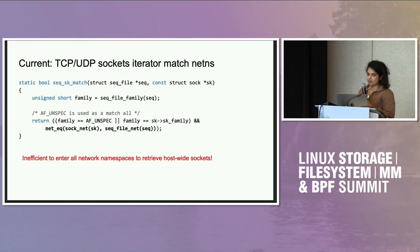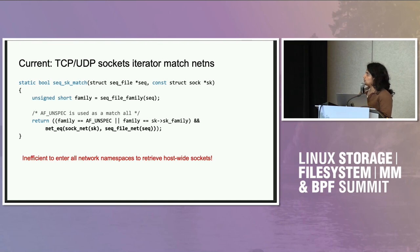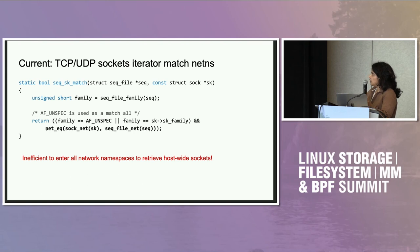I've added a snippet of how the kernel TCP and UDP Sockets Iterator matches network namespaces. As you can see in the highlighted section, if a user needs to iterate over all sockets in the network namespaces, they will have to enter every network namespace and retrieve the data. This is very inefficient, especially when you have a single host-wide sockets hash table. There is a new alternative where socket hash tables can be per-network-namespace, but that's not the default option right now.